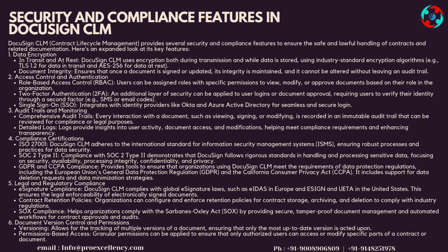Document Version Control and Permissions — Versioning: DocuSign CLM allows for the tracking of multiple versions of a document, ensuring that only the most up-to-date version is acted upon. Granular permissions can be applied to ensure that only authorized users can access or modify specific parts of a contract or document.